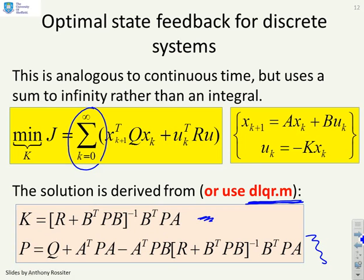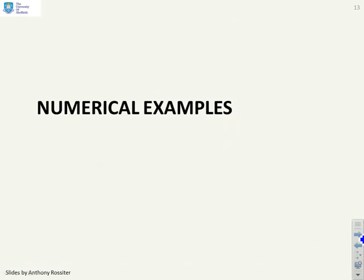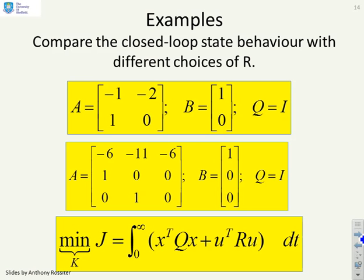Some numerical examples then. Compare the closed-loop behavior with different choices of R. You'll see I've got a second-order system and a third-order system, and for both of these, for convenience, I've just chosen Q to be I. But what I'm going to do is I'm going to change the R and see what's the impact on the closed-loop behavior.